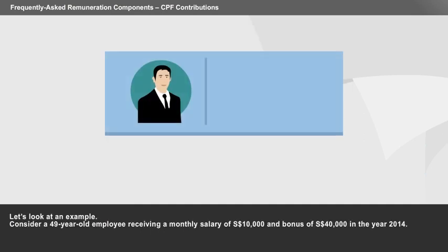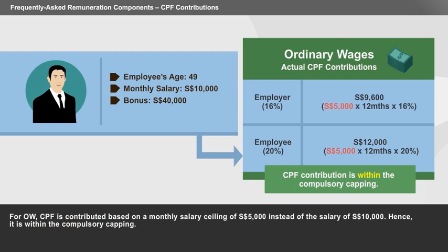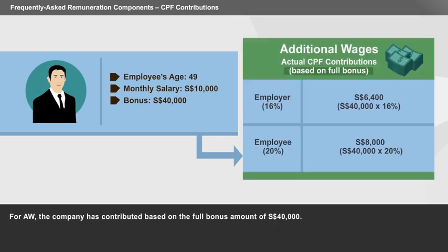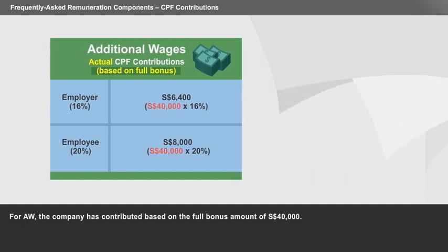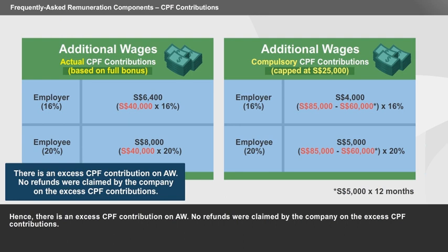Let's look at an example. Consider a 49-year-old employee receiving a monthly salary of $10,000 and a bonus of $40,000 in the year 2014. For OW, CPF is contributed based on a monthly salary ceiling of $5,000 instead of the salary of $10,000, hence it is within the compulsory capping. For AW, the company has contributed based on the full bonus amount of $40,000. The compulsory contribution on AW is capped at $25,000, which is $85,000 less the OW earned in one year. Hence, there is an excess CPF contribution on AW.